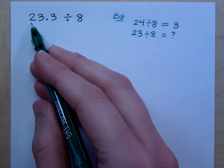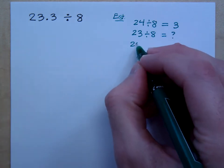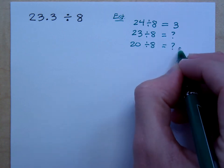If I do front-end rounding, which is where I take the lead-off place here, which is 10s, and round to that, I would have 20 divided by 8, which again is just going to be some decimal. I don't know what it is, but it's not going to be a whole number.